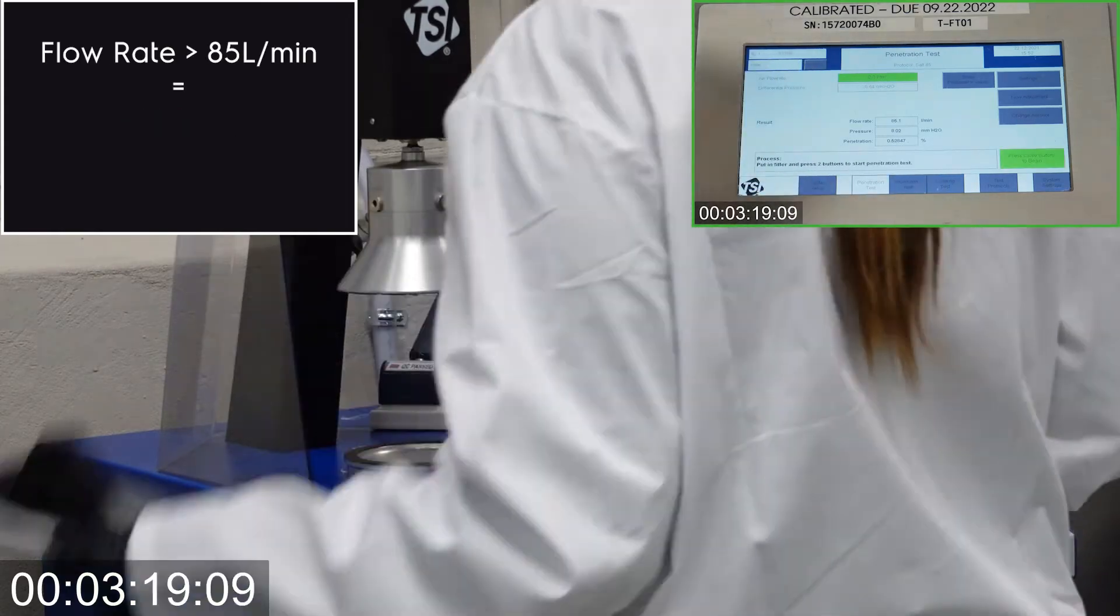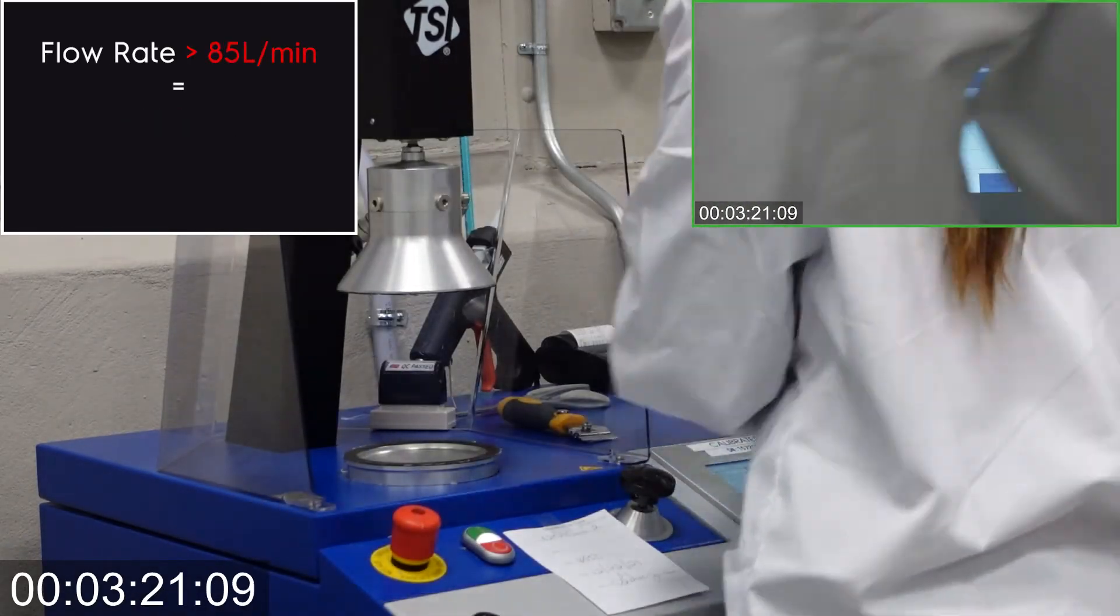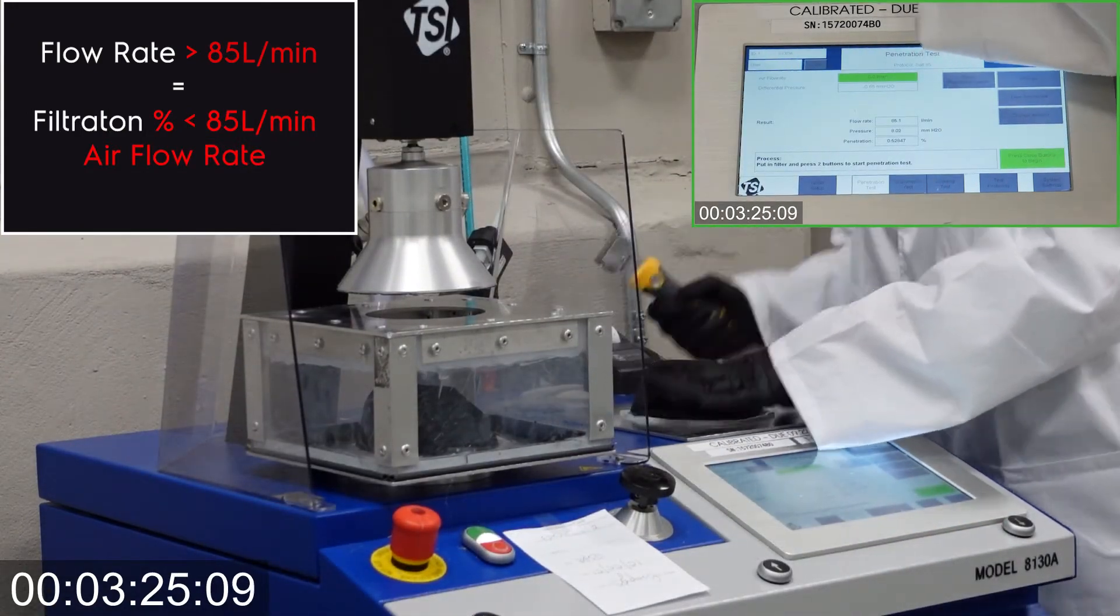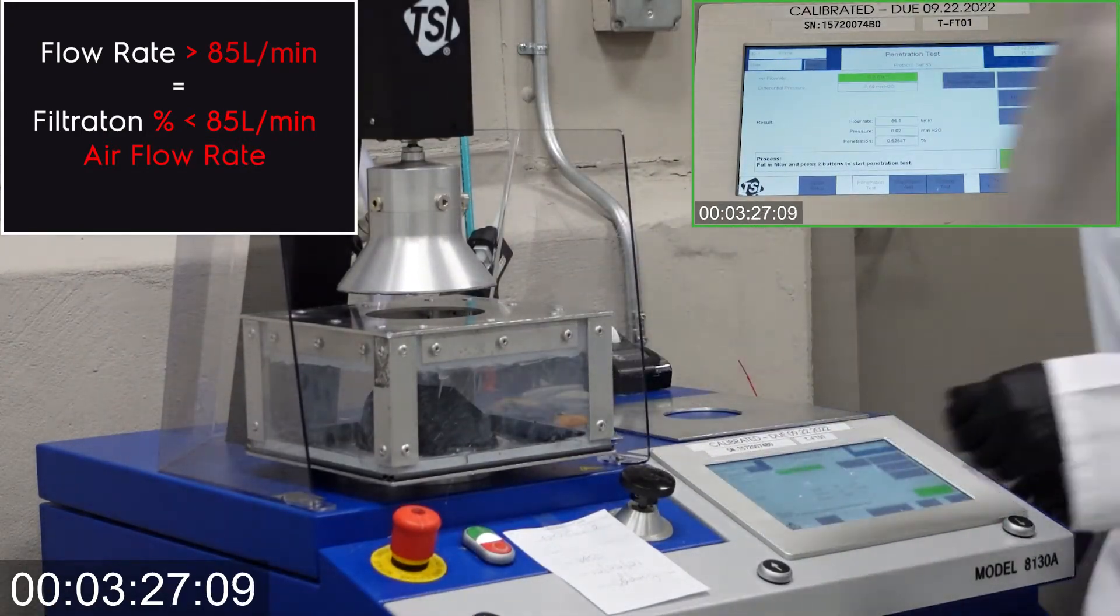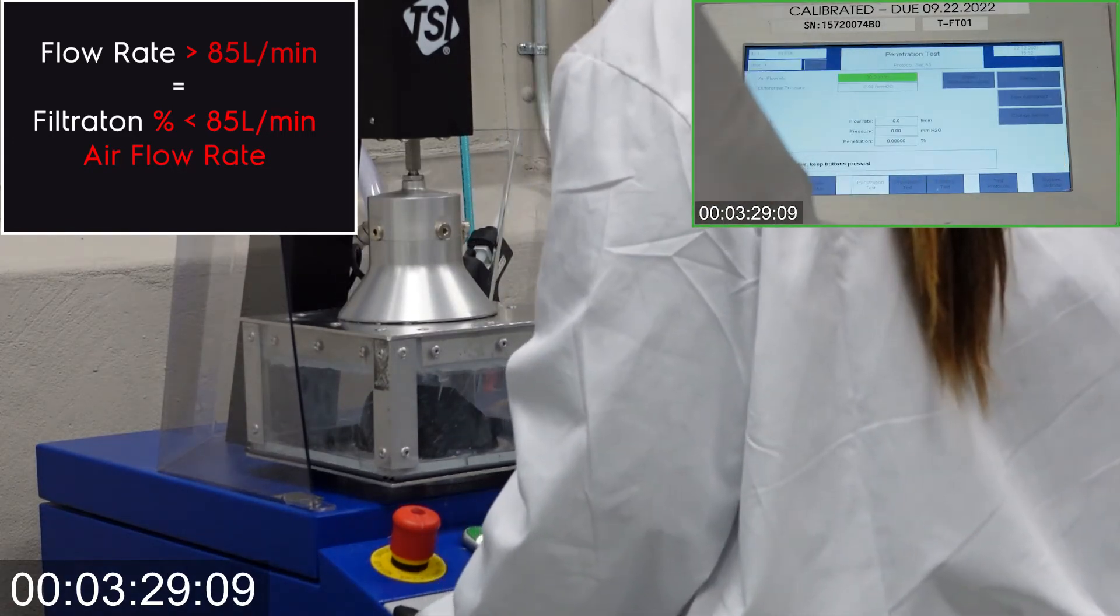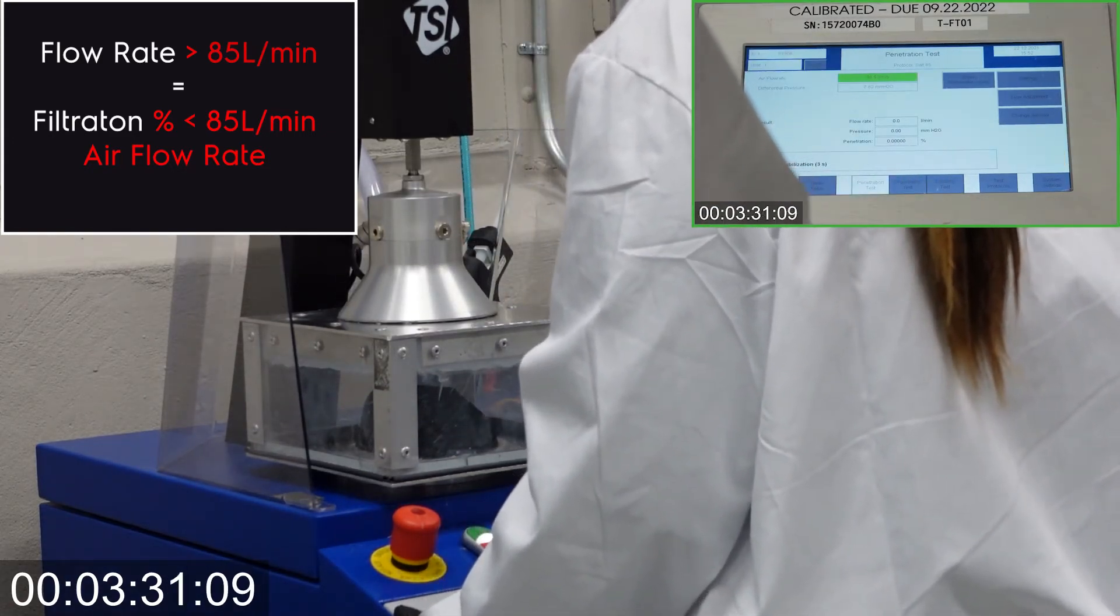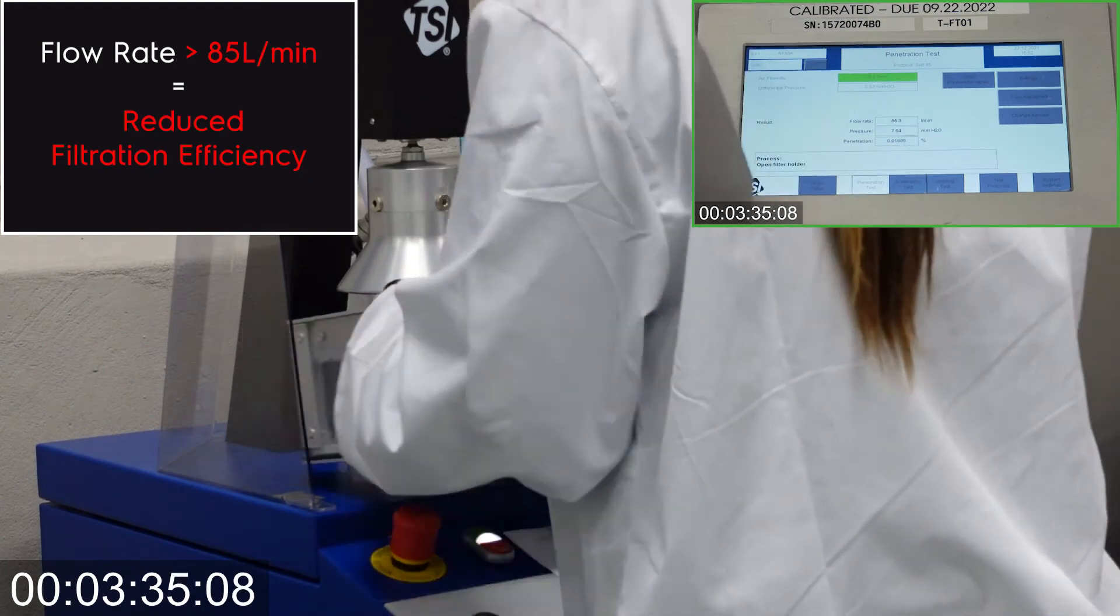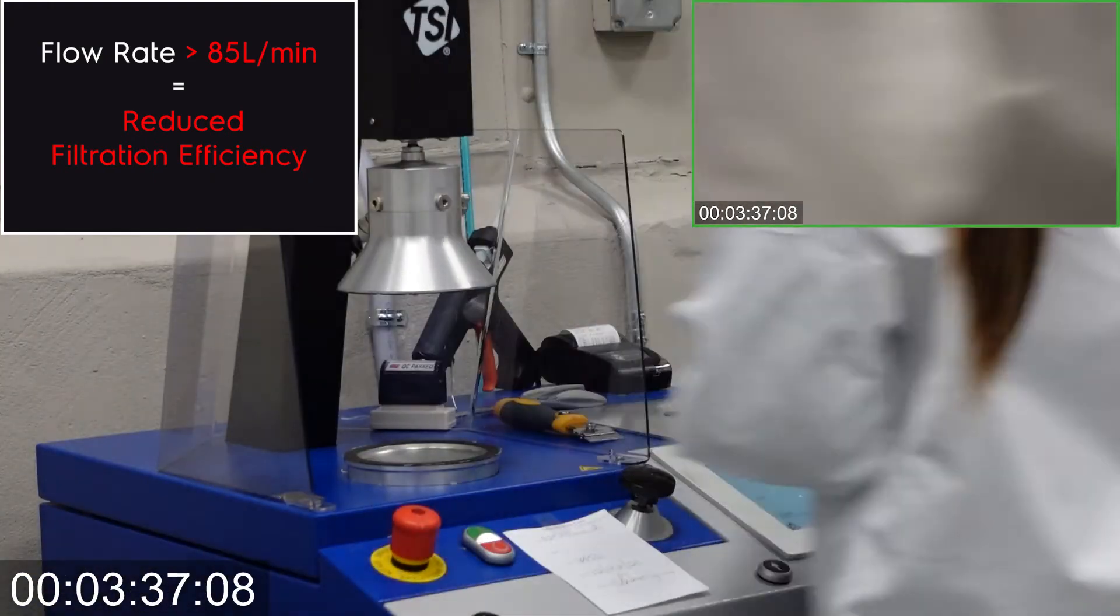If the flow rate is greater than 85 liters per minute, the filtration efficiency result would most probably be less than that of the result when tested at 85 liters per minute. Testing the masks using a greater airflow rate may cause the mask to have a relatively smaller filtration efficiency.